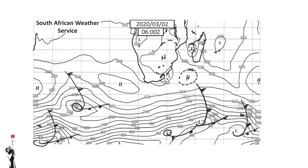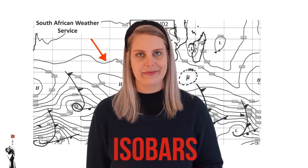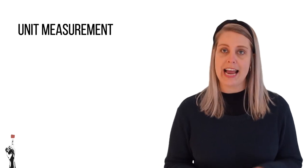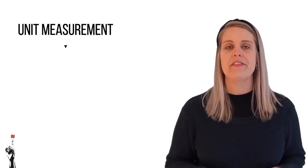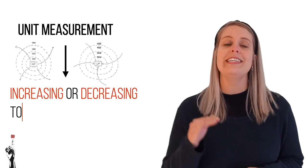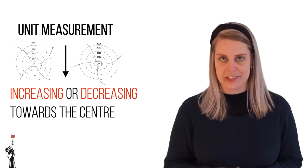On a synoptic chart, there are many lines over the chart. These are lines measuring areas or places of equal air pressure and they are called isobars. These are closed lines all over the map. Each isobar has a unit measurement on it, and depending on if it is a high or a low pressure cell, the numbers will increase or decrease towards the center.